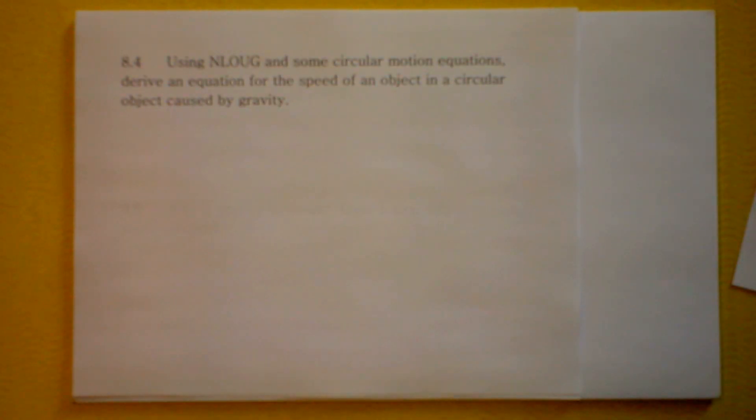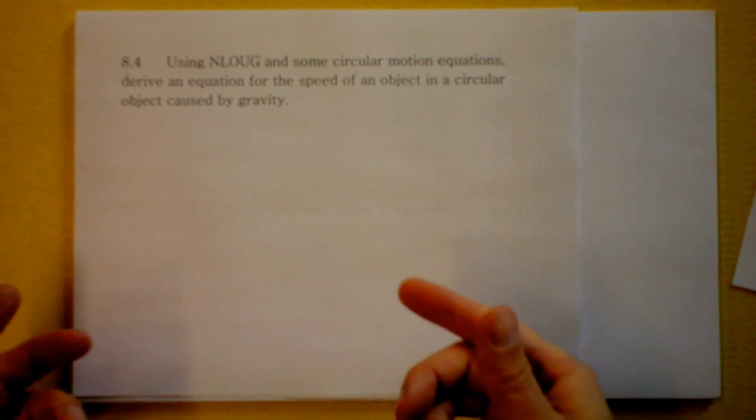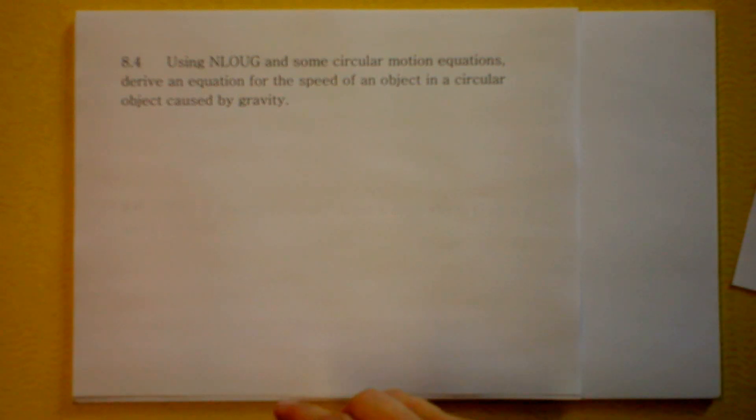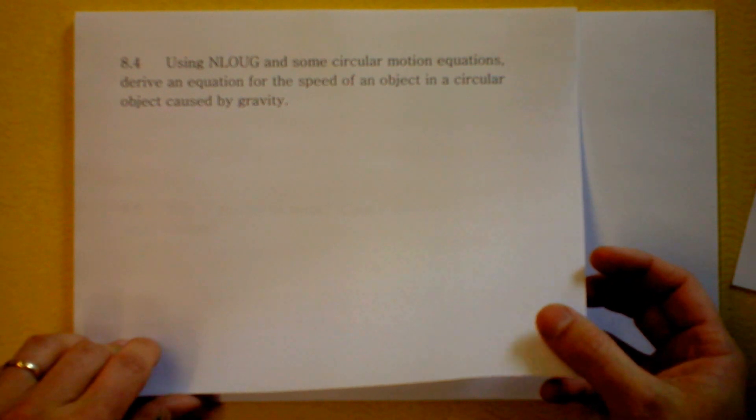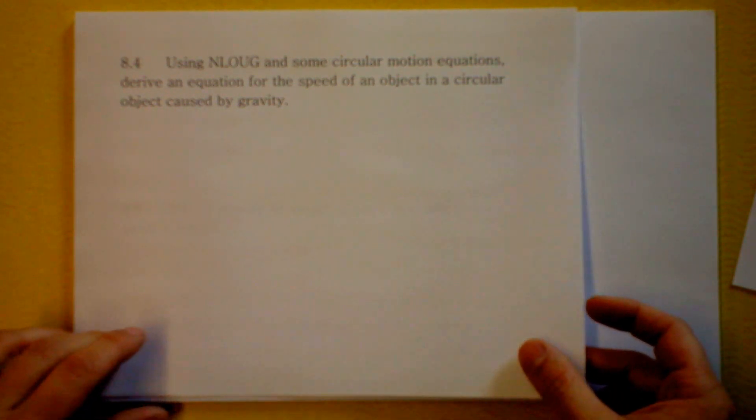This one, Newton's law of universal gravitation and some circular motion equations, could you be any more cryptic, Dr. Schuster? You want to derive this equation for the speed of an object in a circular orbit caused by gravity. I am not sponsored in these videos, although I'd be happy to talk to somebody at General Motors.